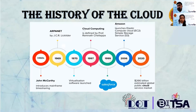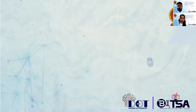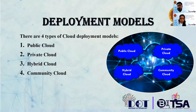Now we are going to identify deployment models. There are four types of deployment models. The first one is public cloud, which allows systems and services to be easily accessible to the general public. Public cloud may be less secure because of its openness.